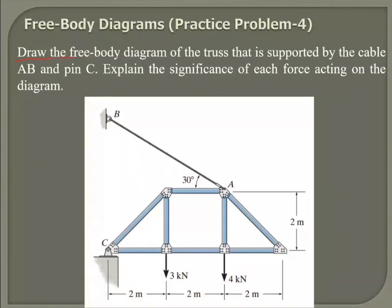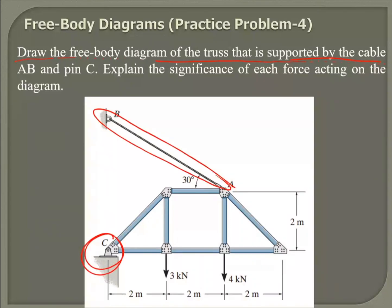For the free body diagram of the truss that's supported by the cable AB — that's the cable — it is supported and it's pin jointed here. Cable and pin joint. So draw the free body diagram; you've got 1 million.